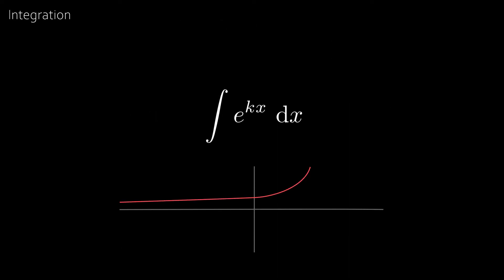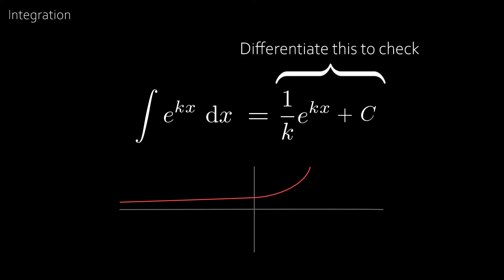Now what about the integral of e to the kx where k is some constant? Well this is equal to 1 over k e to the kx plus c. And to check this just differentiate the right hand side and you'll see you'll end up with e to the kx.